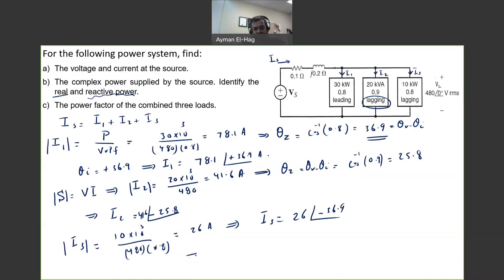So now we know I1, I2, so from this, you just add them. Your Is is equal to I1, which is 78.1, angle of 36.9, plus I2, which is 41.6, angle of minus 25.8, plus I3, which is 26, angle of minus 36.9. Now, when we add all these currents, we'll get 121 angle of 6.2 amps. And I did detailed calculations how we can add those numbers in polar format. We have to convert them into rectangular format and then convert them back into polar format. So this is your Is. This is your current coming from the source.